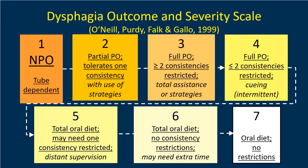A second diet outcome scale you might be more familiar with is the DOSS — the Dysphagia Outcome and Severity Scale — which is still quite widely used in research today. It also formed some background framework for the previous National Dysphagia Diet in North America. Like the Swallowing Performance Status Scale, it has seven levels, but organized in the opposite direction: a score of one reflects no oral intake and tube dependency, while a level seven represents an oral diet with absolutely no dietary restrictions.